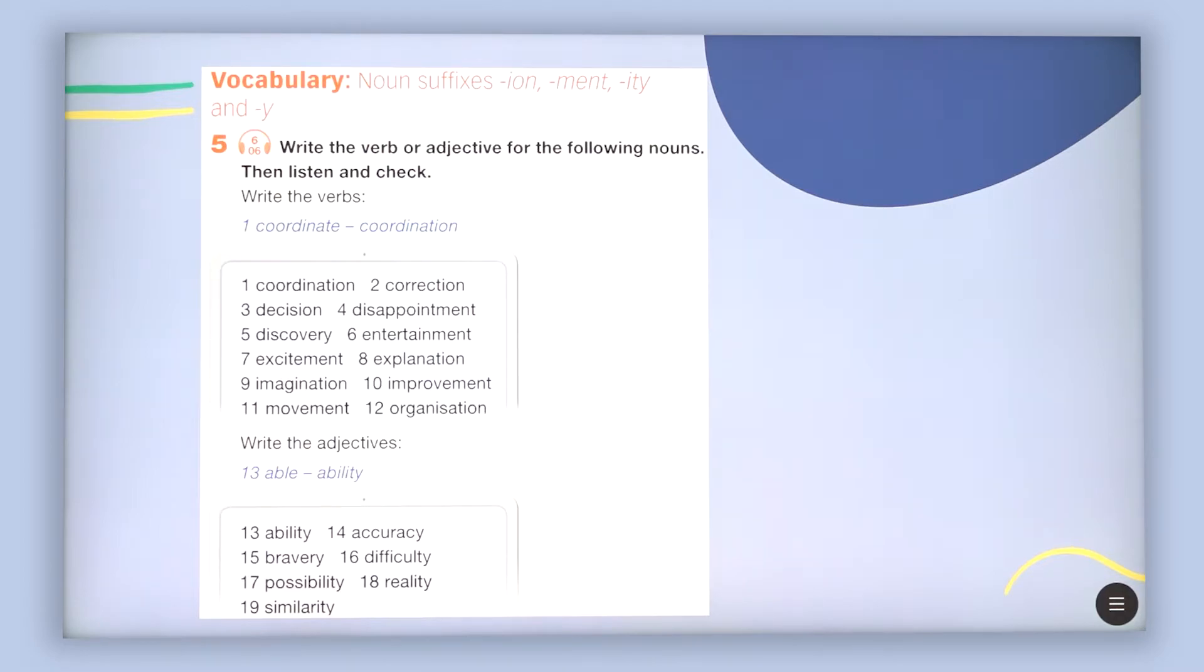Write the verbs. For example coordinate, coordination. Then you can see the next one which is correction, correct or correction. Decide, disappoint, discover, entertain, excite, explain, imagine, improve, move and organize. And here you can see the nouns that are created from these verbs.